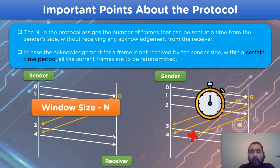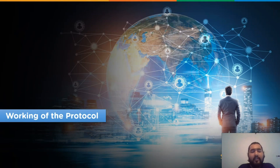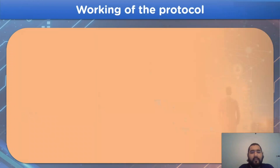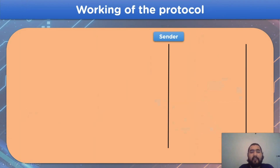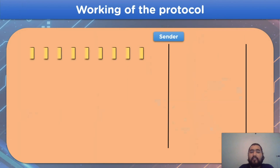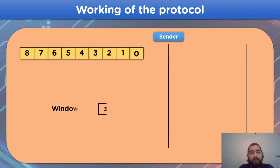Now let's move on to the working of the protocol. To begin with, we have a sender side and a receiver side, along with the sequence number. The window size for the network channel and the number of frames will already be assigned in the network.